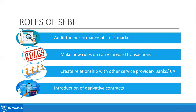The last role is the introduction of derivative contracts. SEBI plays an important role in introducing various contract mechanisms, operations, and overall procedures for trading in derivative contracts. So these are the various roles of the Security and Exchange Board of India. Thank you.